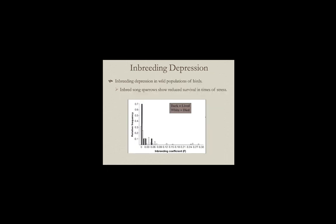Inbreeding can also affect survival. Data from song sparrows show that in a really stressful year when weather conditions were bad and food was limited, inbred individuals all died. Quite a few outbred individuals died too, but all survivors were the least inbred, most outbred individuals — probably having more genetic diversity and much less expression of deleterious recessive traits.